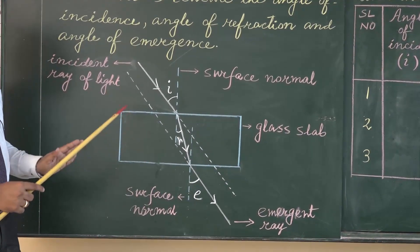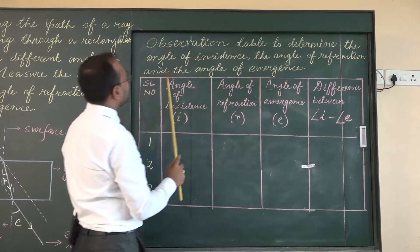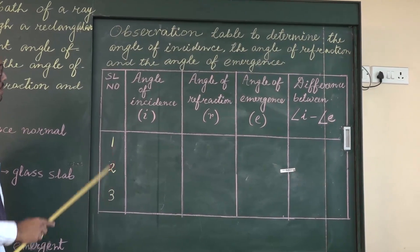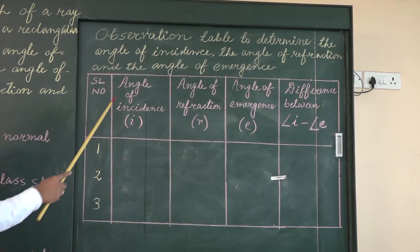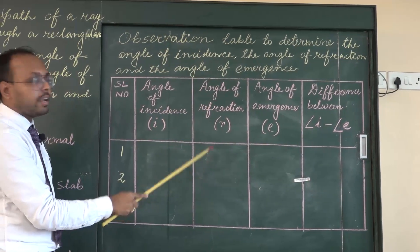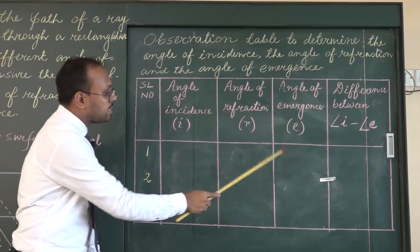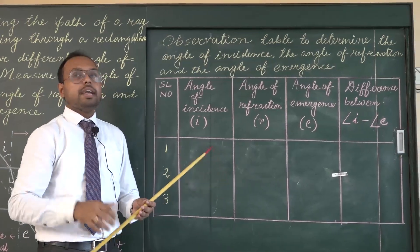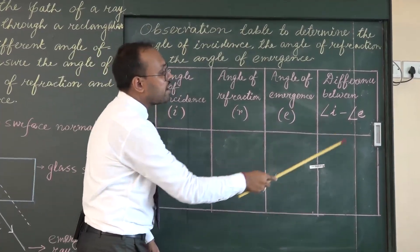We need an observation table. The table is drawn to record the angle of incidence, angle of refraction, and angle of emergence. We will repeat the experiment three times: first with an angle of incidence of 30 degrees, then 45, then 60. We know that ideally the angle of incidence and angle of emergence should be exactly equal. If there is a small difference due to practical error, we will calculate it. Hopefully, the deviation will be very minimal.